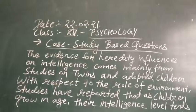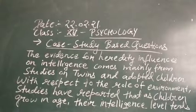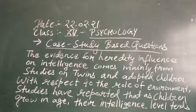The evidence for heredity influence on intelligence comes mainly from studies on twins and adopted children. With respect to the role of environment, studies have reported that as children grow in age, their intelligence level tends to move closer to their adoptive parents.